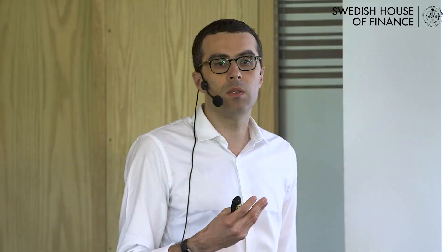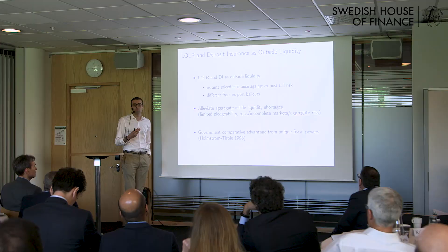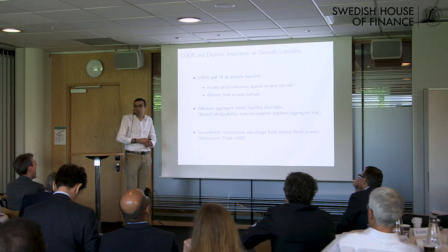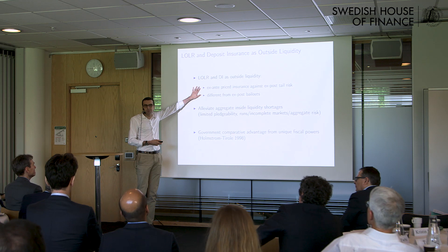Think about Diamond-Dybvig, for example. One way private markets could try to prevent runs was by securing credit lines, but they would need to acquire liquidity in private markets, and it's difficult to think that liquidity would be available in the case of a systemic crisis. So it's better to rely on insurance from the government — it's different from an ex-post bailout because it can be done with commitment and doesn't require the government to step in to validate the errors of the financial system.